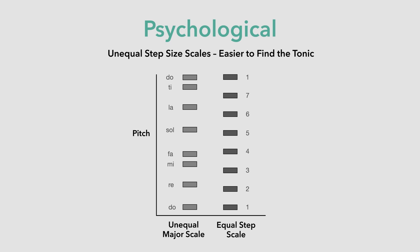Seven is roughly the number of items we can manage in working memory, and so cognitive constraints limit our scales to make them relatively easy to learn and memorize. Our musical scales also feature unequal step sizes, because it makes it easier to find the tonic in a given key. For example, the distance between pitches E and F is one semitone, but between F and G it's two semitones.